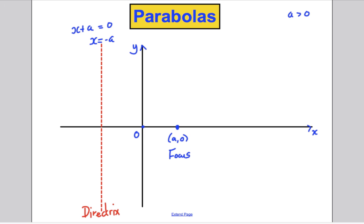I want to draw all the points that are the same perpendicular distance — the same right-angle distance — from this line as they are from that focus point. The same right-angle distance from the directrix as from the focus point — I want to plot all such points.